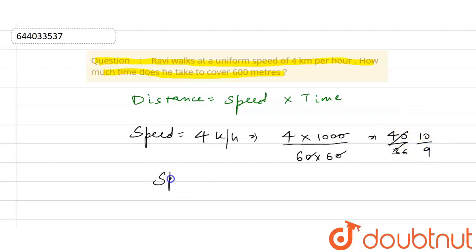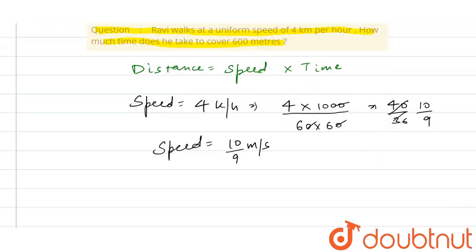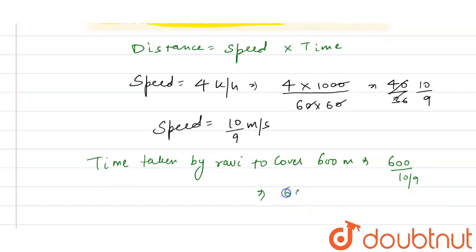So the time taken by Ravi to cover 600 meters equals 600 divided by 10/9. This equals 600 multiplied by 9 divided by 10.